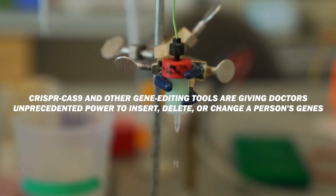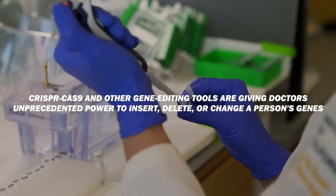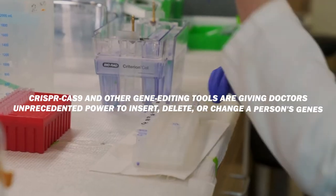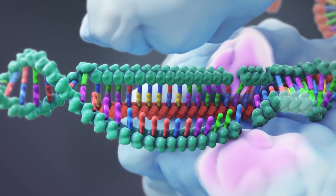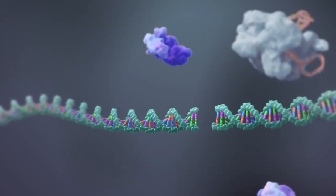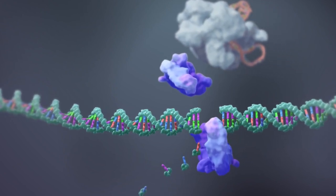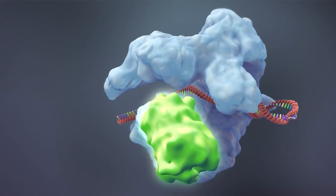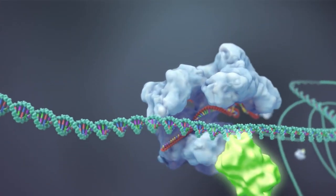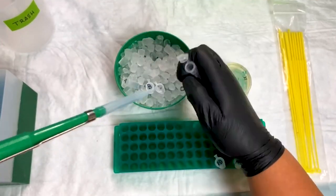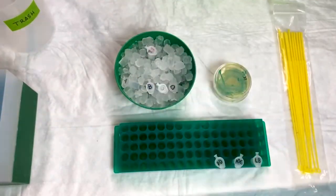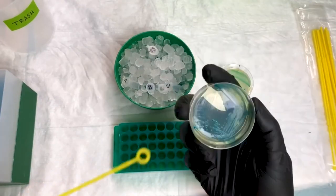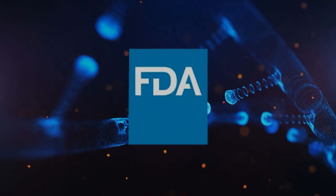CRISPR-Cas9 and other gene editing tools are giving doctors unprecedented power to insert, delete, or change a person's genes. We will be able to eliminate or suppress disease-causing genes while inserting or amplifying genes that promote longevity and good health in the not-so-distant future. Gene therapy works by efficiently giving cells genes that make required proteins in patients whose own genes cannot produce them. Gene editing is just one of the emerging technologies of the genetic revolution. This method is already being used to treat a few uncommon disorders, but it is on its way to becoming a common and very effective medical treatment. By 2025, the FDA hopes to have approved 10 to 20 such therapies.